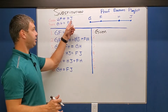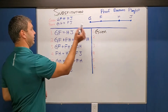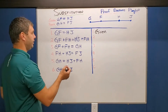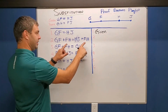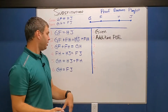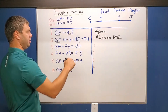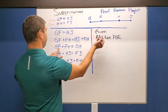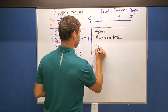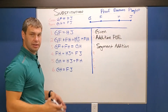Proof three: given GF equals HJ, prove that GH equals FJ. The first statement is given. Then we add FH to both sides of the equal sign — that's the addition property of equality. Line three says GF plus FH equals GH — part plus part equals the whole, so that's segment addition. Line four says FH plus HJ equals FJ — again part plus part equals the whole, segment addition.